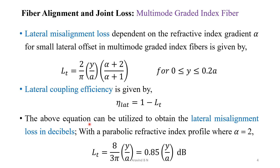This lt equation can be utilized to obtain the lateral misalignment loss in decibels. For the specific case of a parabolic refractive index profile with alpha equal to 2, the equation reduces to: lt = (4)/(3π) × (y/a), which is further equal to 0.85 × (y/a) in decibels.